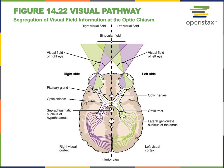The axons of the retinal ganglion cells travel through the optic nerves to the optic chiasm. At the optic chiasm, axons coming from the medial portion of the retina cross the midline, projecting to the contralateral hemisphere of the brain. This midline crossing ensures that the left hemisphere processes the visual information from the right half of the visual field, and the right hemisphere processes information from the left half of the visual field. After the optic chiasm, the axons of the retinal ganglion cells continue into the optic tract and eventually form synapses with neurons in a region of the thalamus known as the lateral geniculate nucleus. The thalamus neurons then relay information to the primary visual cortex in the occipital lobe of the cerebrum, where visual perception begins.